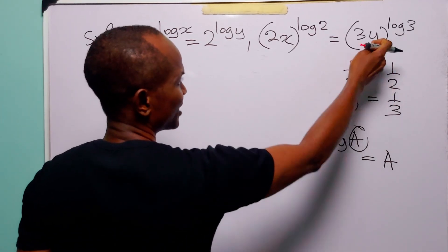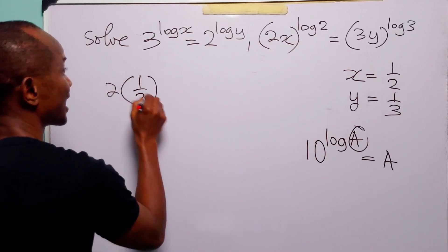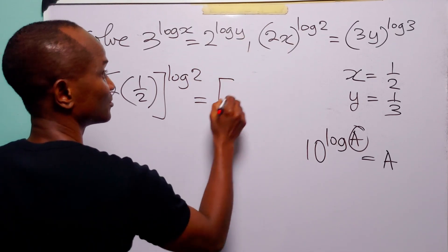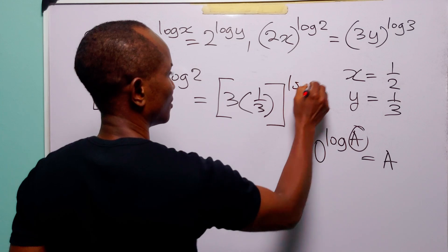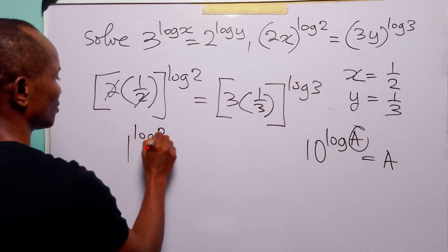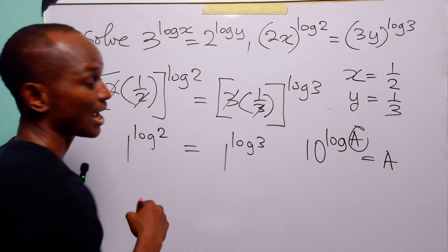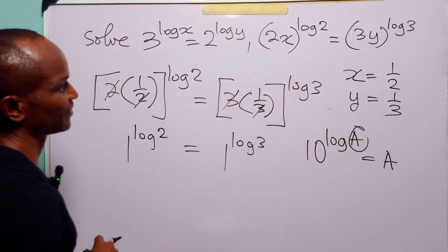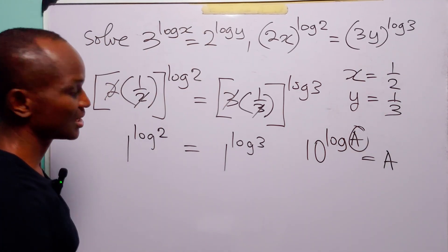Substituting into the second equation: 2 times (1/2) to the power log 2 equals 3 times (1/3) to the power log 3. The 2 and 1/2 cancel to give 1 to the power log 2, and the 3 and 1/3 cancel to give 1 to the power log 3. Since 1 raised to any power equals 1, both sides are equal, and the second equation is also satisfied.